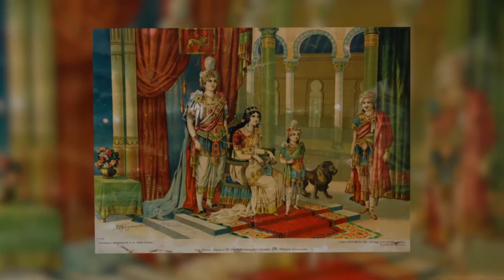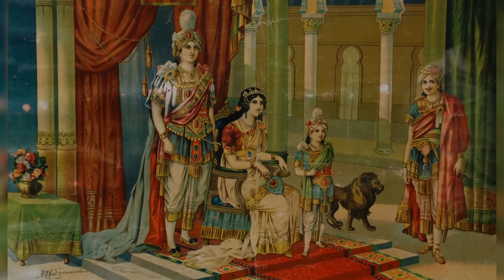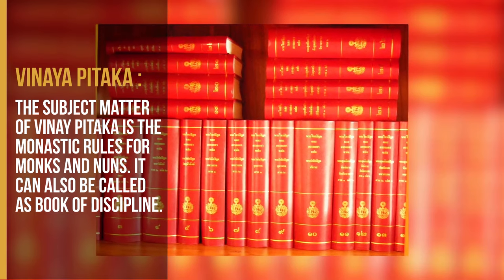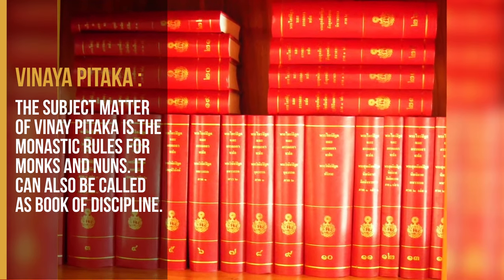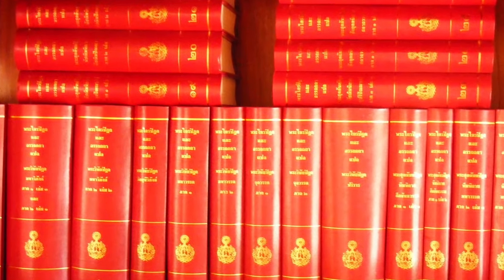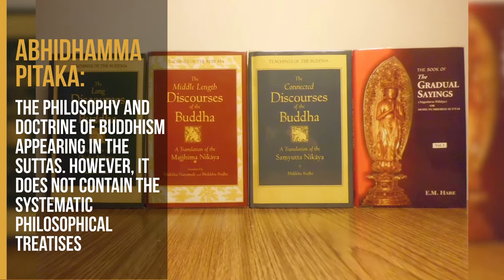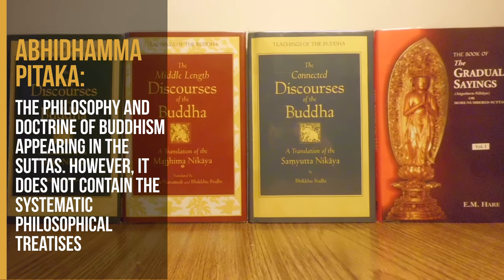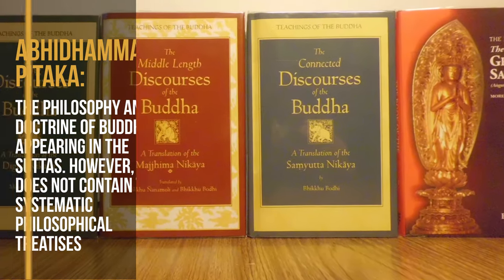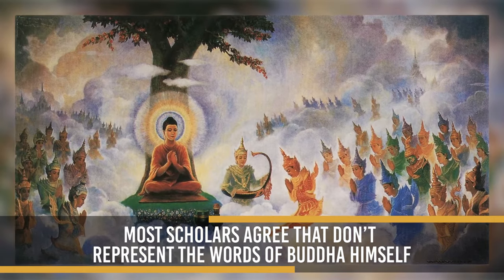The first Buddhist council was held under the patronage of King Ajatasatru with the monk Mahakashyapa presiding at Rajgir. 2. Vinaya Pitaka — The subject matter of Vinaya Pitaka is the monastic rules for monks and nuns. It can also be called the book of discipline. 3. Abhidhamma Pitaka — It deals with the philosophy and doctrine of Buddhism appearing in the sutras. However, it does not contain systematic philosophical treatises. There are seven works of Abhidhamma Pitaka, which most scholars agree do not represent the words of Buddha himself.